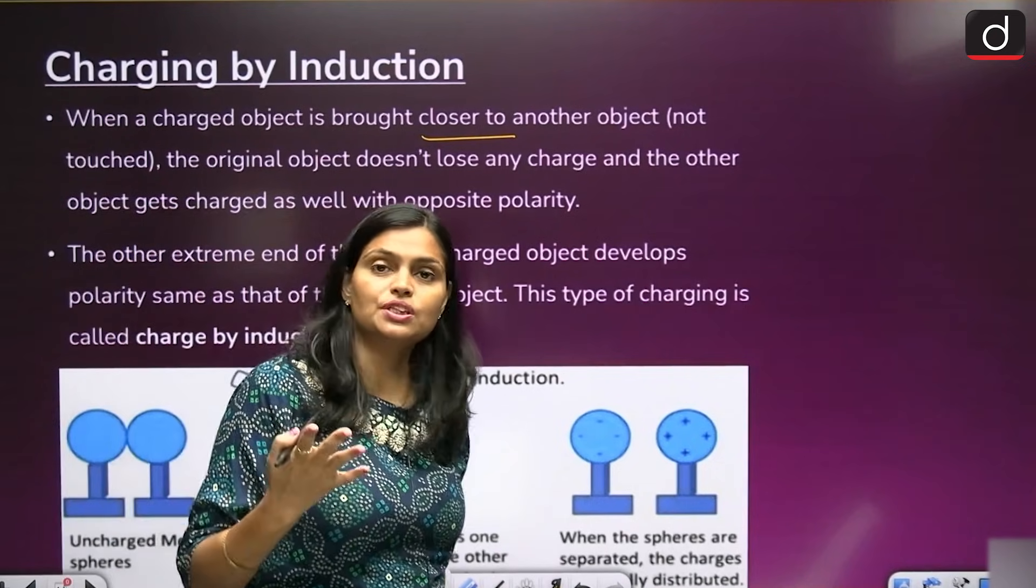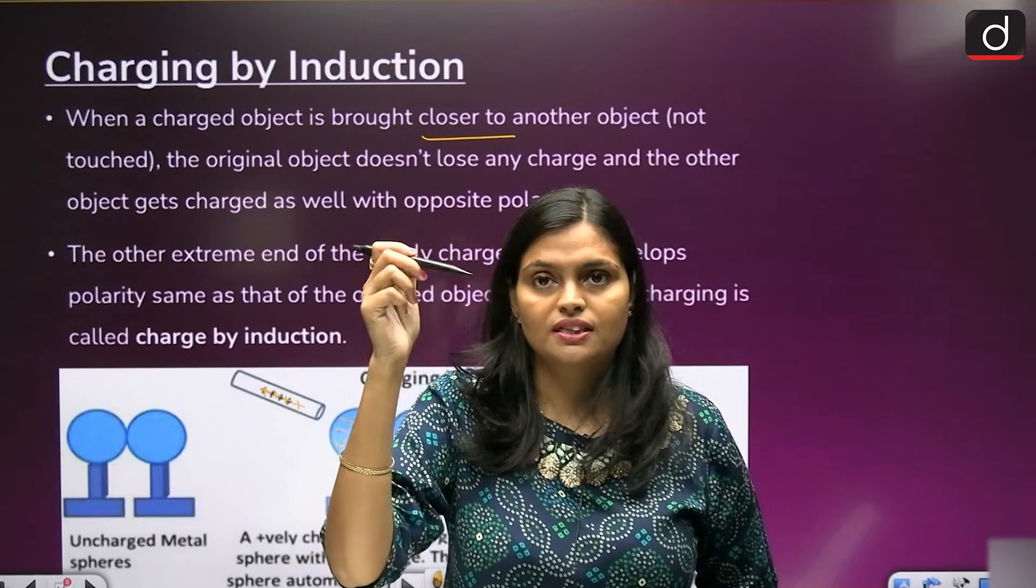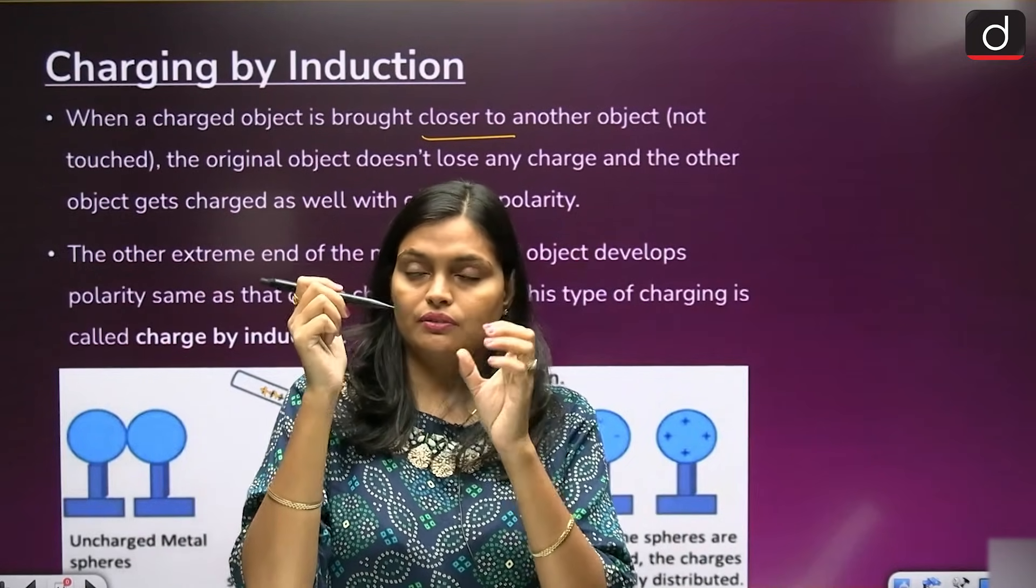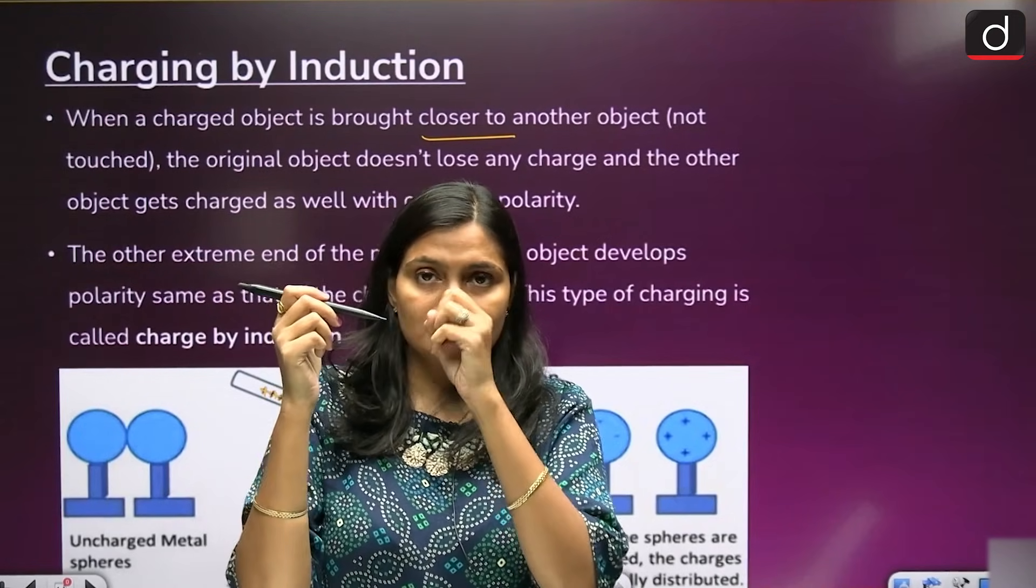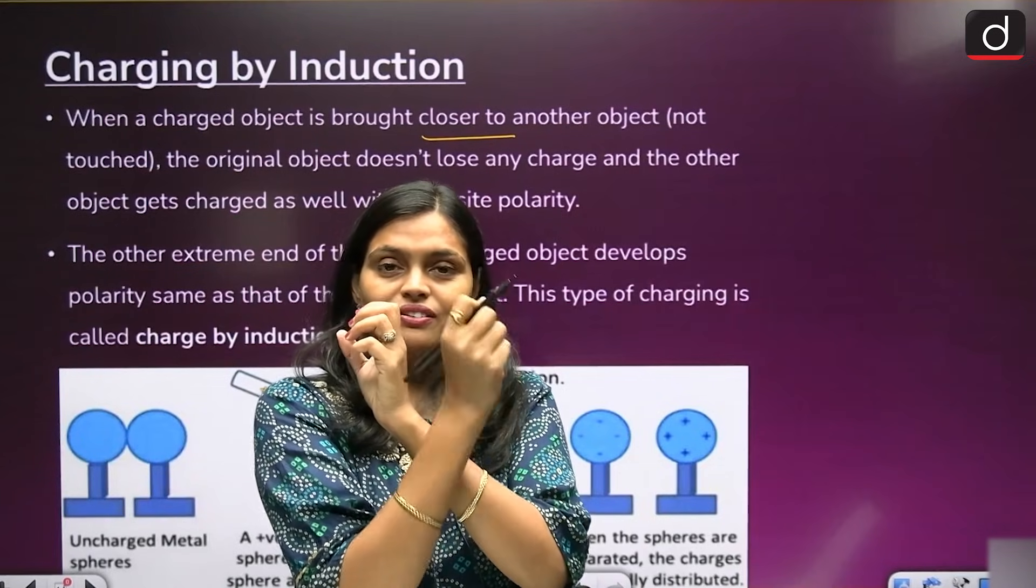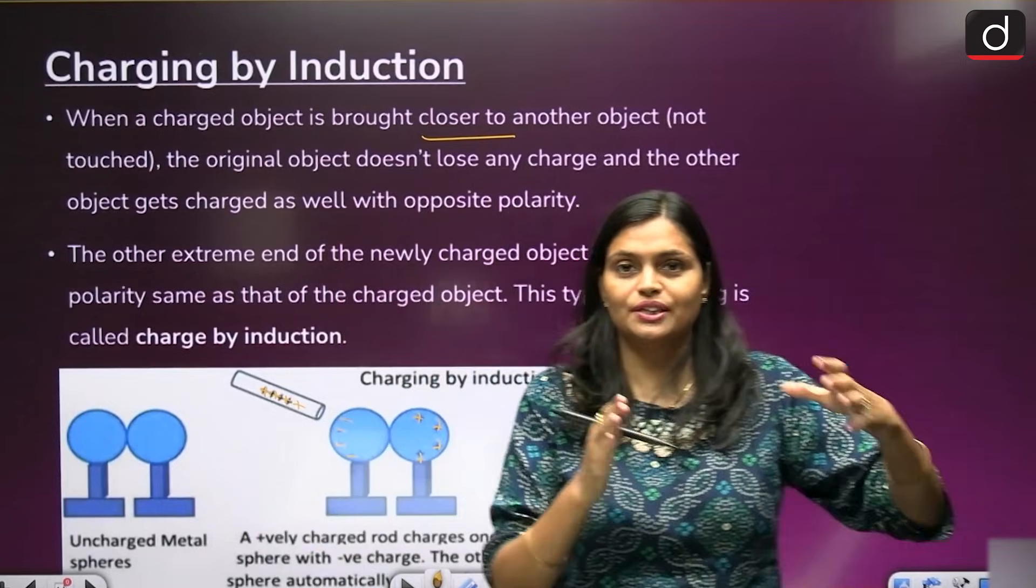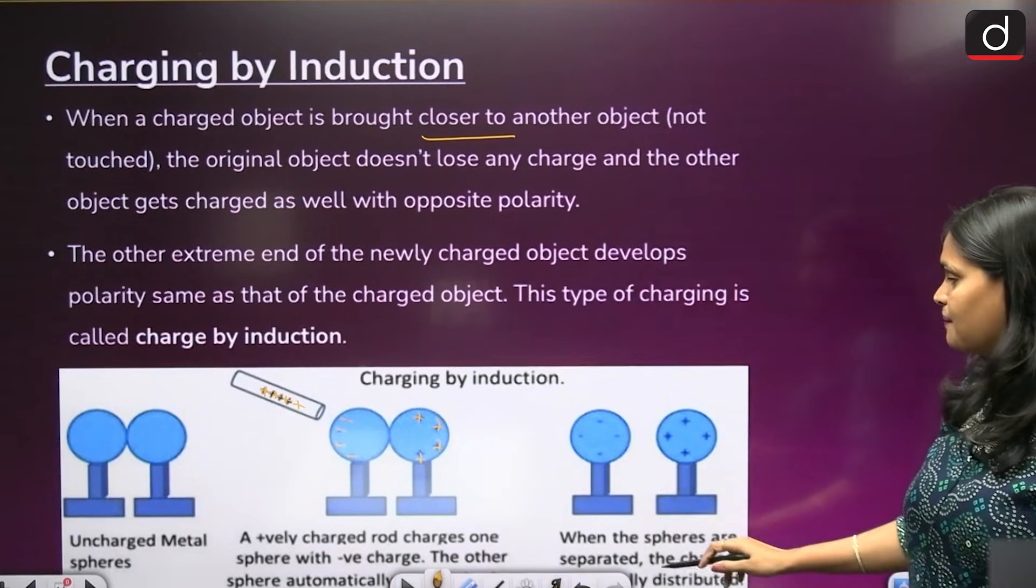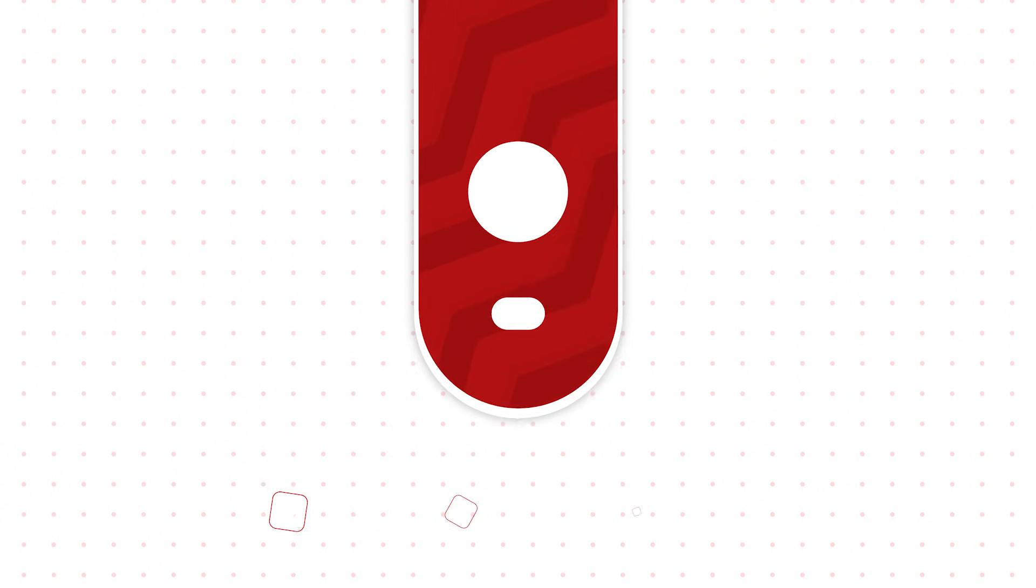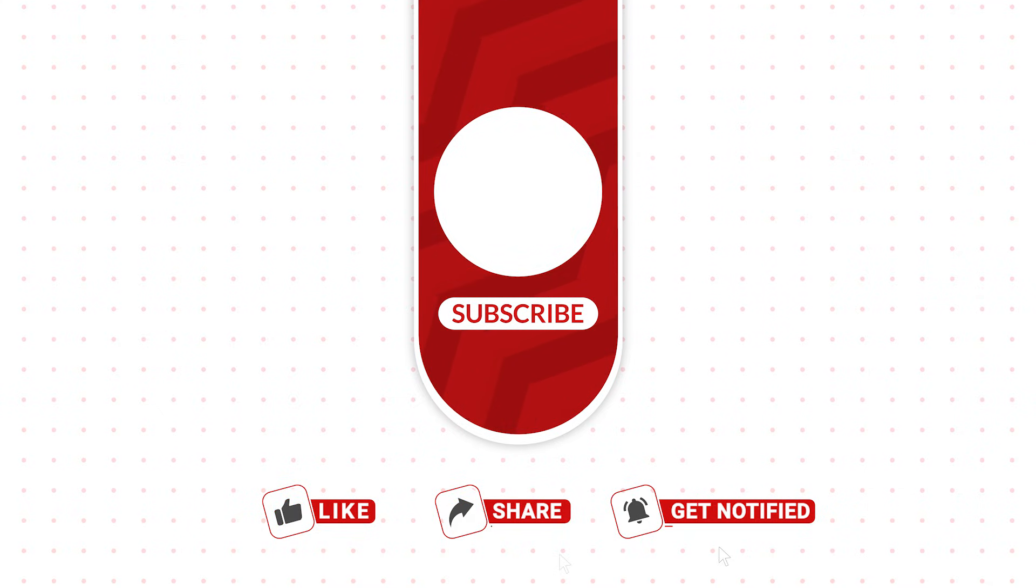A positive charge rod charges one sphere with negative charge. The other sphere automatically gets charged with positive charge. Two metallic spheres. Initially when you bring the rod near to that sphere, positive charge induces negative charge within this sphere. The other sphere which is near the first sphere, if this is negative, this becomes positive. Just opposite charges induce. When the spheres are separated, the charge gets distributed. So this is what we call charging by induction.